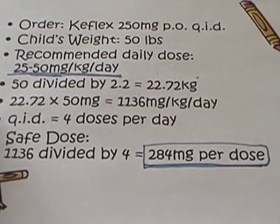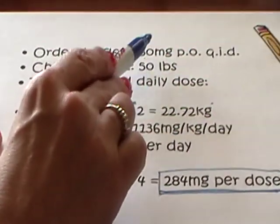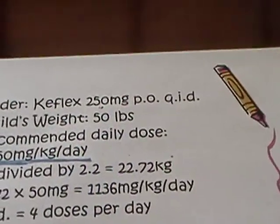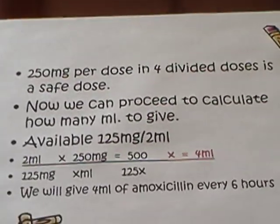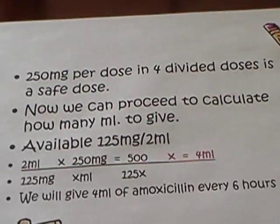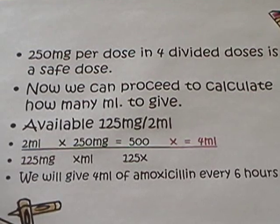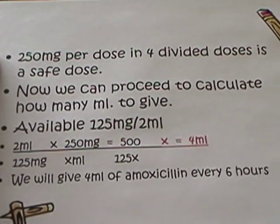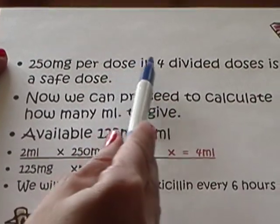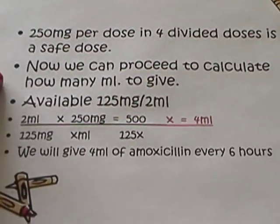284 milligrams per dose. The physician ordered 250 milligrams. Is this a safe dose? Yes, because the ordered dose is less than the safe dose. So we could calculate now how much we would give. One thing you don't need to try to do is use all of your numbers — that's the most common mistake in weight-based doses. Once you're finished and you have calculated the safe dose, then you look at what you have available and how much you're going to administer. We know that 250 milligrams per dose in four divided doses is a safe dose, so now we can proceed to calculate how many milliliters we will administer.